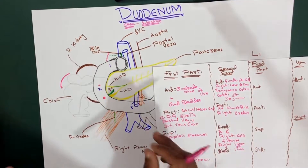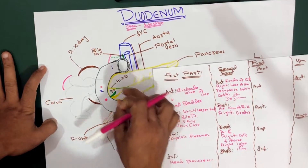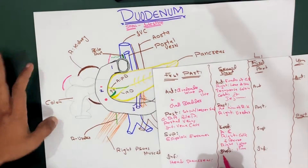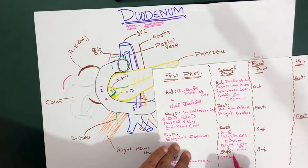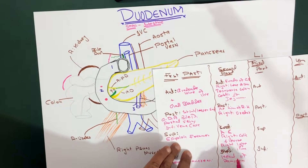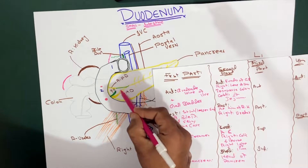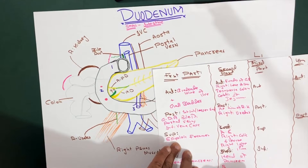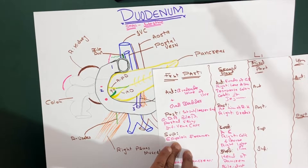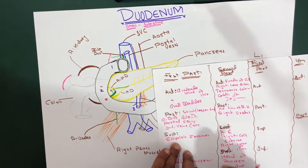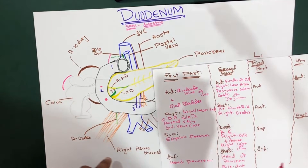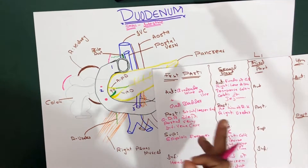On the medial side, we can see the biggest structure — this is actually the head of the pancreas. So we add up the head of pancreas. Two other structures are ducts: we have the bile duct and the main pancreatic duct. In case we also have the accessory pancreatic duct, we can add that up on the medial side of the second part of the duodenum as well.